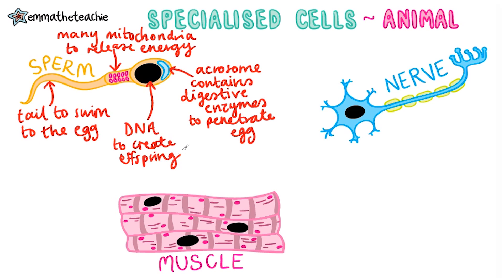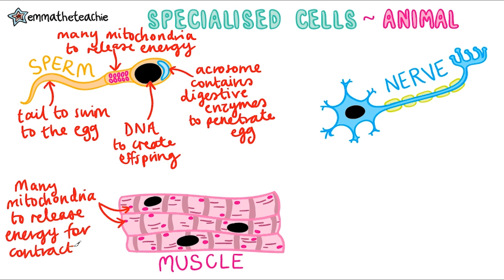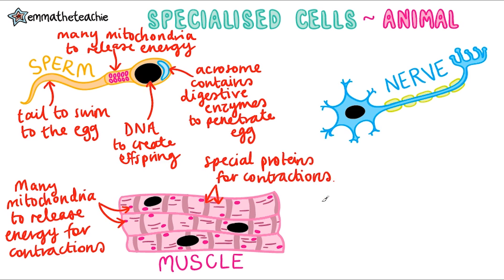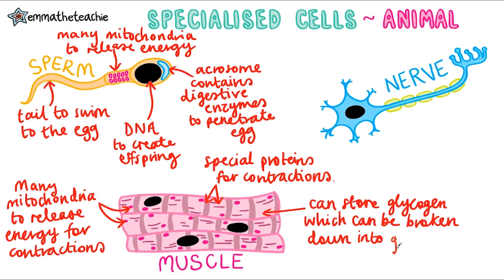Down below, we've got some muscle cells. Their function is to contract and relax, causing movement. Can you spot anything that would help them do this? Well, you can see that we've got lots of tiny little pink things, which are mitochondria. These release the energy needed for the contractions. And finally, these cells can also store glycogen. This is broken down into glucose to allow respiration to happen. You're going to learn more about respiration in the bioenergetics topic, so don't worry too much about that now.